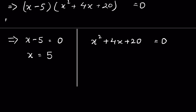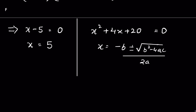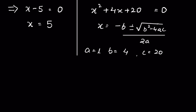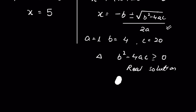We can find the roots using the quadratic formula: x equals minus b plus or minus the square root of b squared minus 4ac, all over 2a. Here a is 1, b is 4, and c is 20. If the discriminant b squared minus 4ac is greater than or equal to 0, there is a real solution. If it is less than 0, there is no real solution.